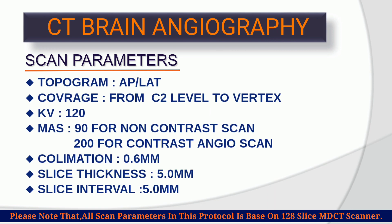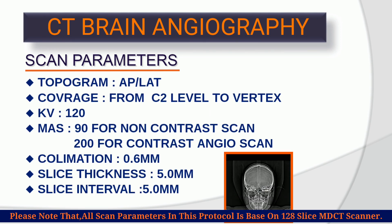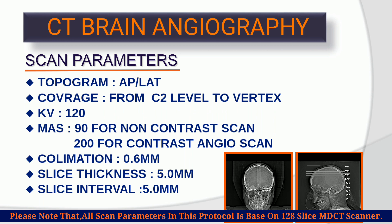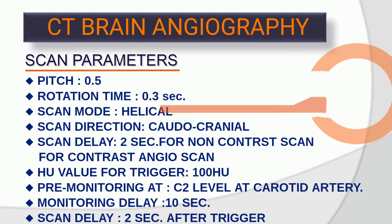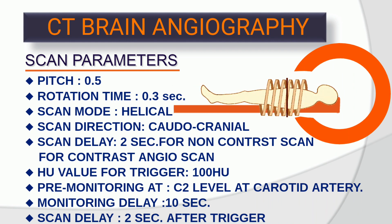Scan parameters. Topogram: AP and lateral. Coverage from C2 level to vertex. KV: 120. mAs: 90 for non-contrast scan, 200 for contrast angio scan. Collimation: 0.6 mm. Slice thickness: 5 mm. Slice interval: 5 mm. Pitch: 0.5 mm. Rotation time: 0.3 seconds. Scan mode: helical. Scan direction: caudocranial.